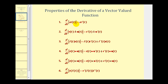The first property states that if we want to find the derivative of a constant times the vector valued function R of t, that'll just equal the constant times the derivative of that vector valued function. The second property states that if we have a sum or difference of vector valued functions and we want to find the derivative, we just find the derivative of each vector valued function individually.